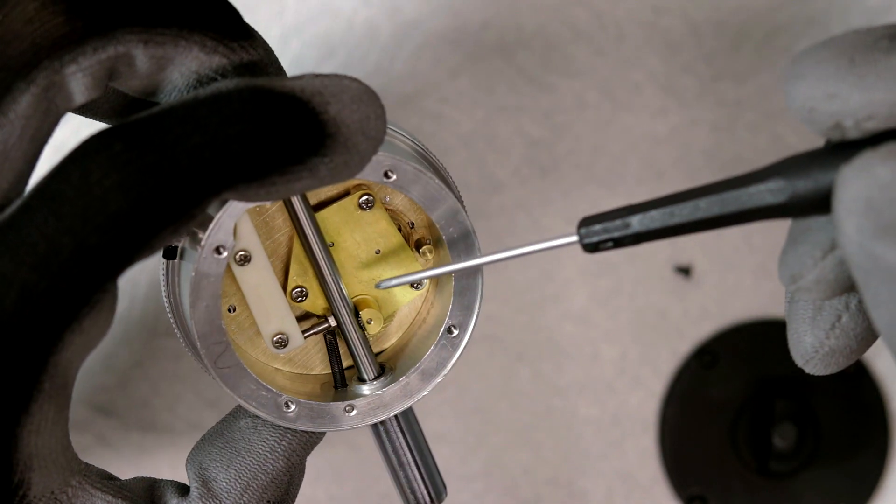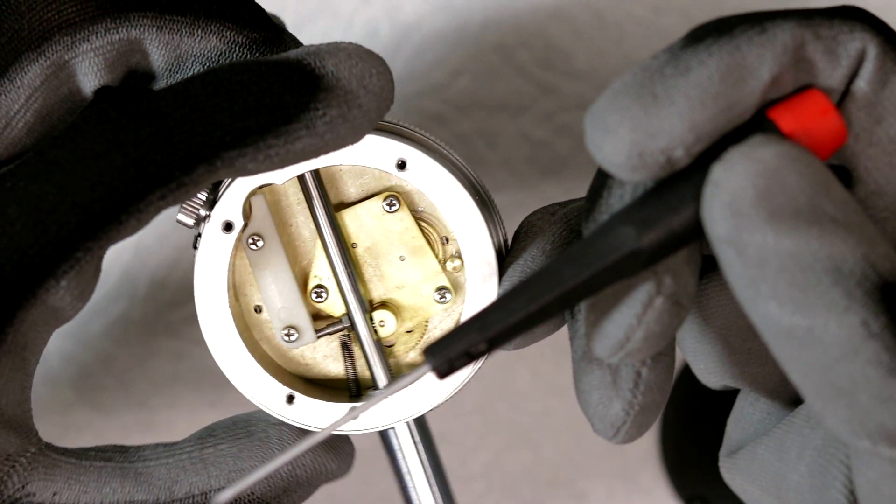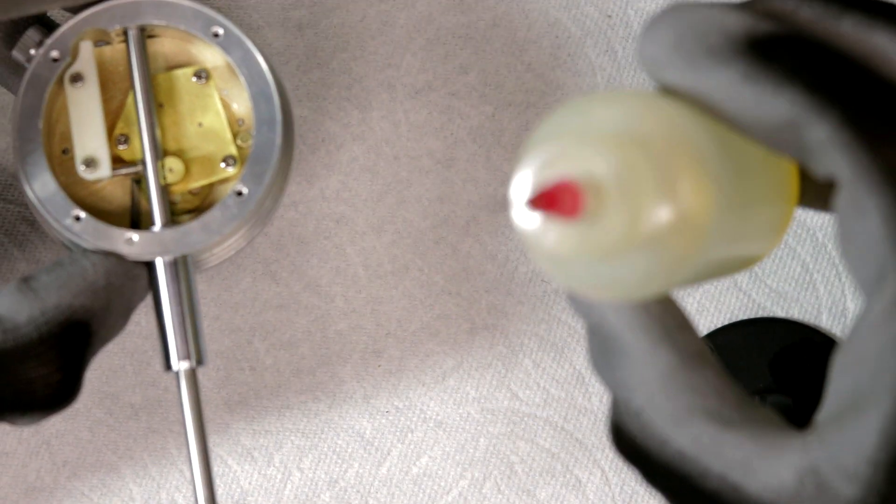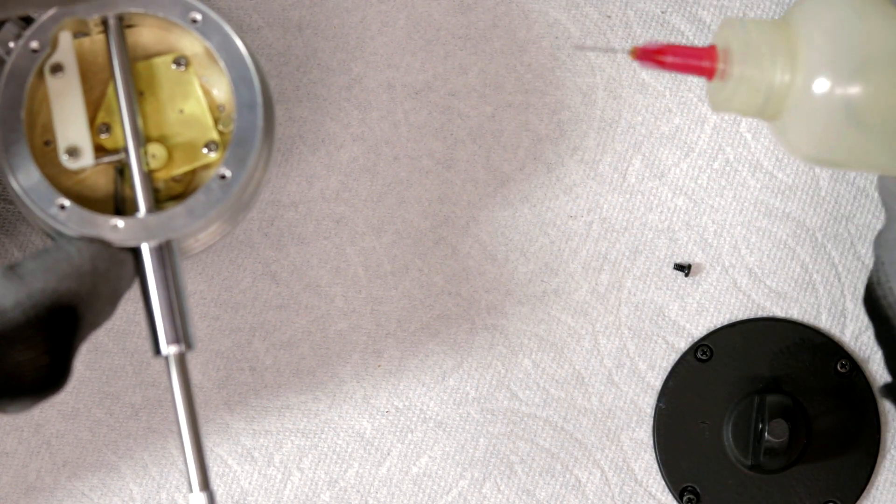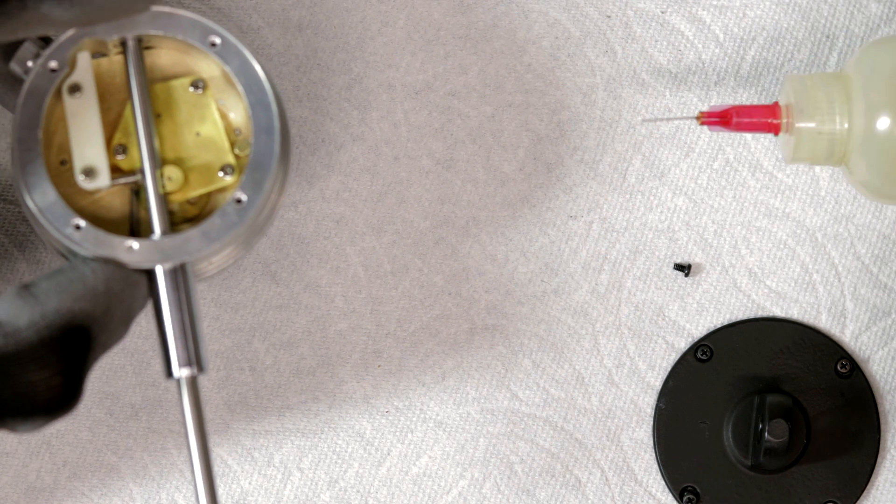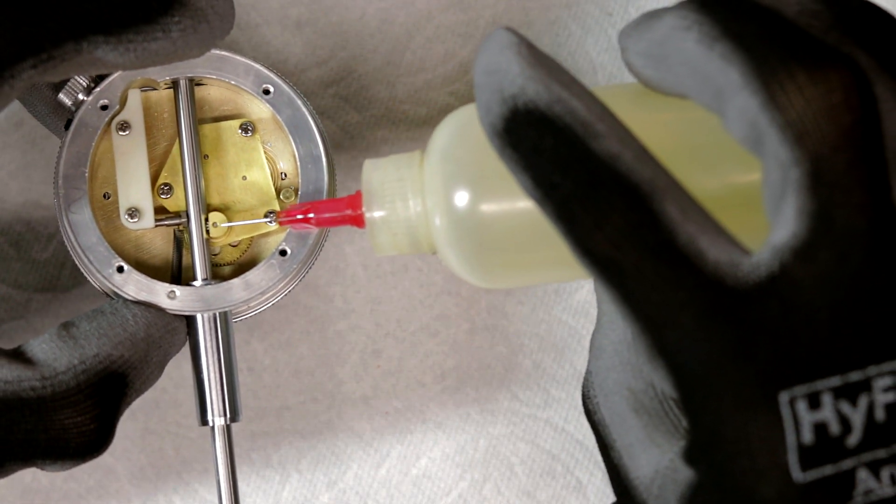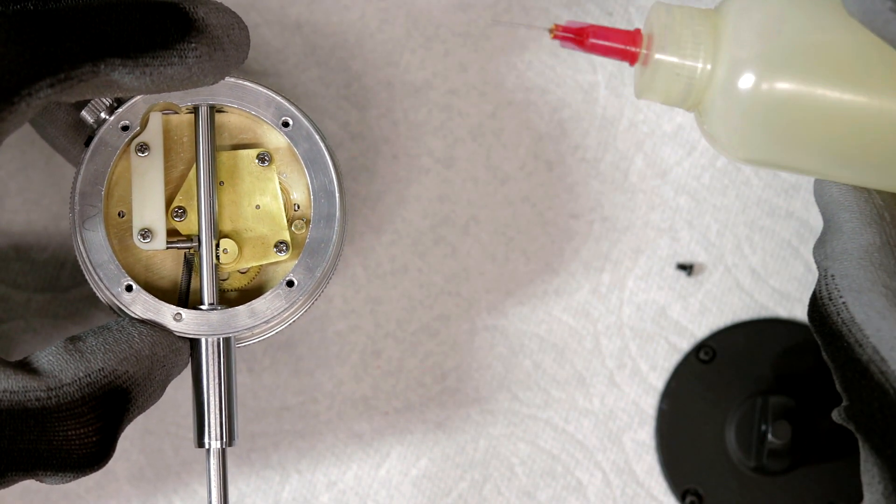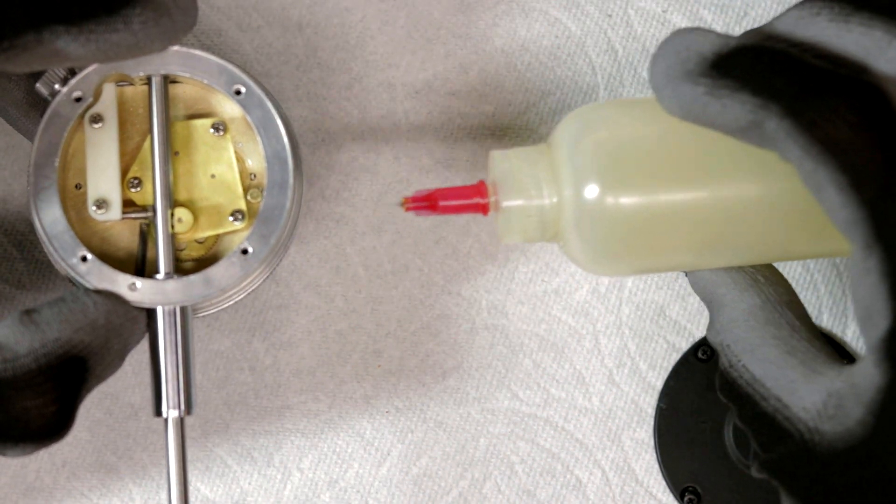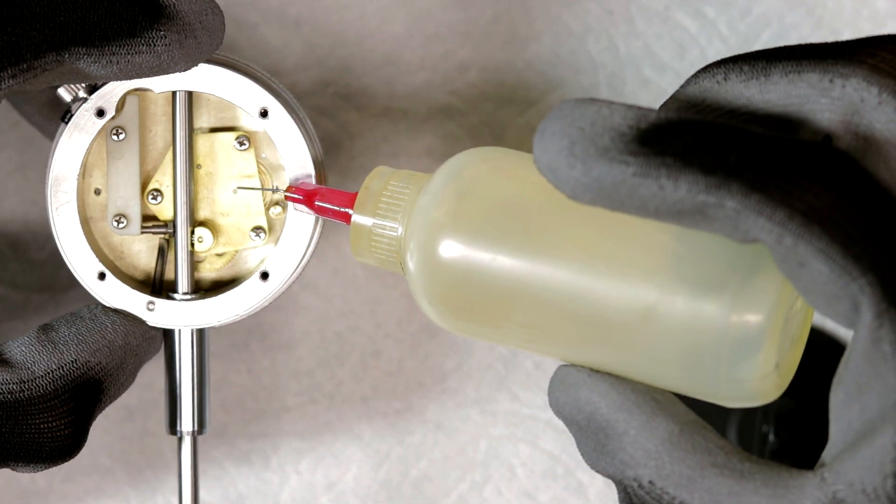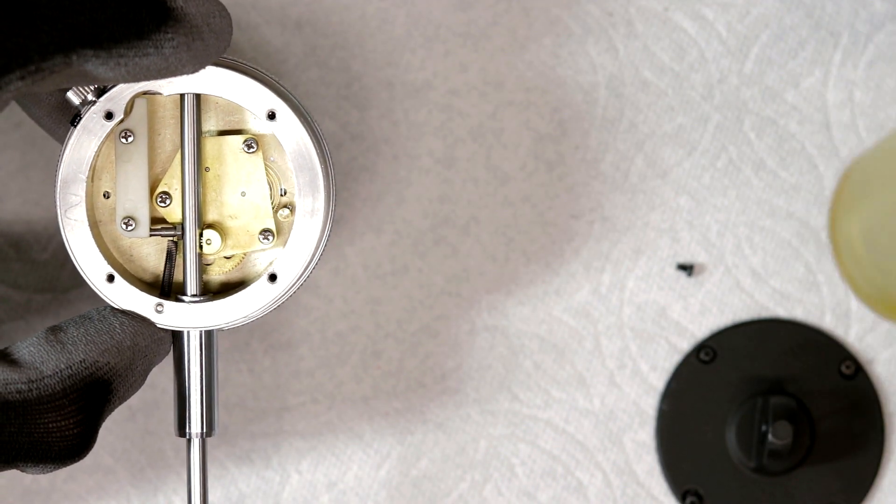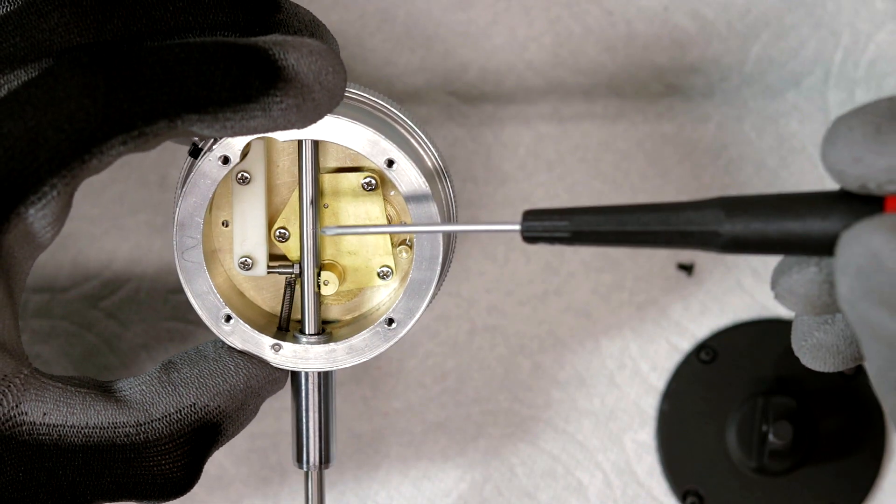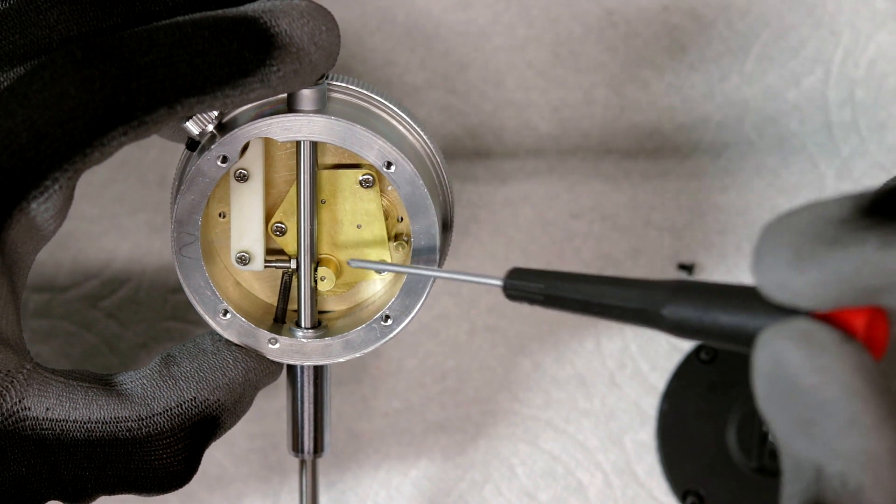And so I just lubed up those points with a very tiny amount. Watchmakers will actually take a needle and they'll just dip it in a little thing of oil, and just let the needle kind of transfer the oil to where they want the oil to go. And so this is pretty much the same, just because this needle is so small. So I was able to just add like a quarter of a drop from this. So very light amount of oil, and I was able to get everything working.